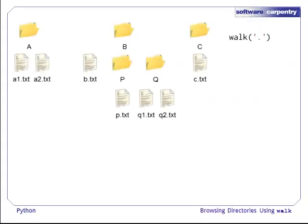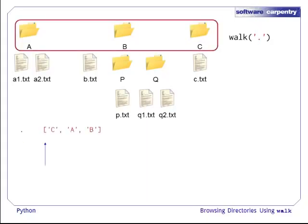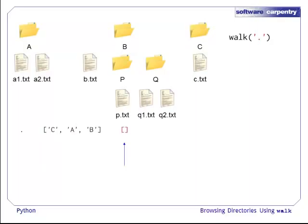So, given this directory structure, walk would create a tuple with the path to the current directory, for example, dot. There would be a list of directories in the current directory, in this case A, B and C. As for list dir, the list of the directories is in no specific order. And there would be a list of the files in the current directory, in this case there are none, so the list is empty.